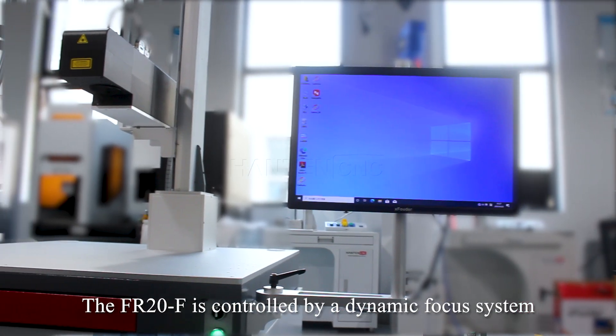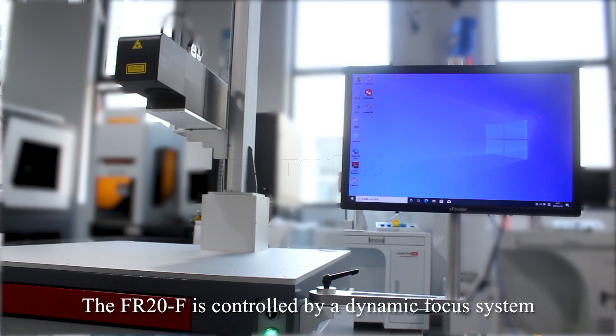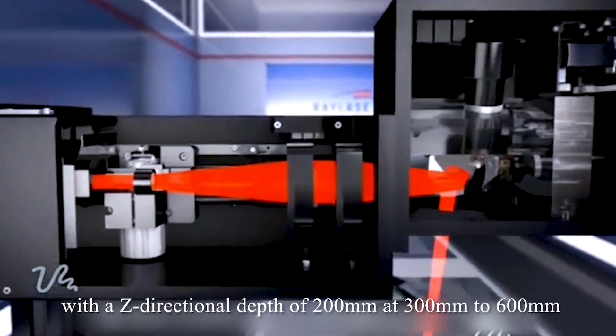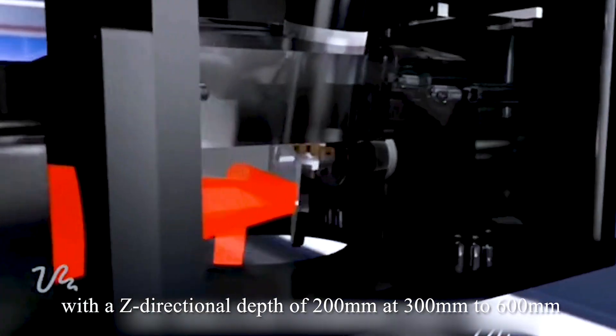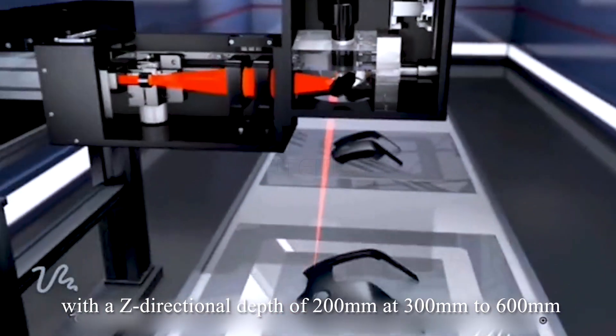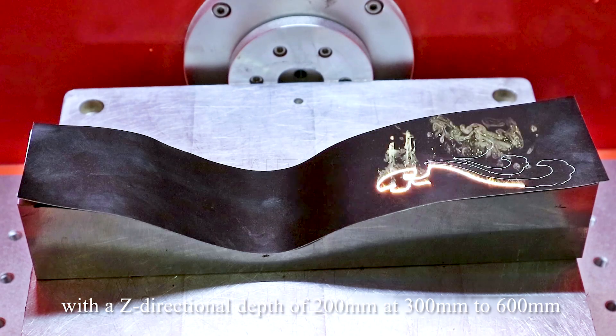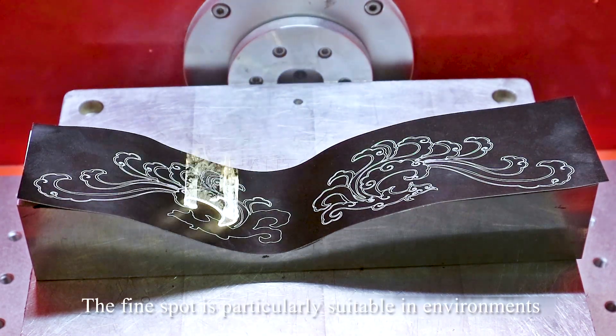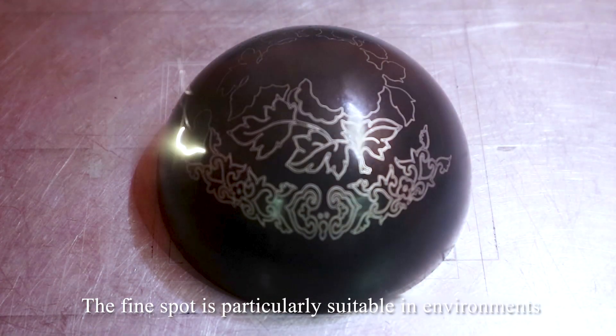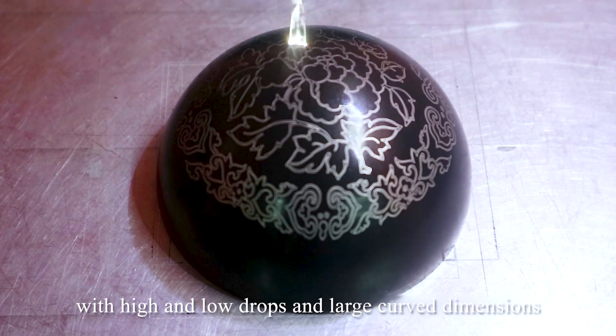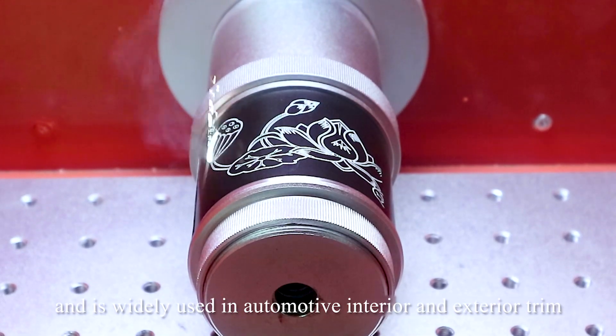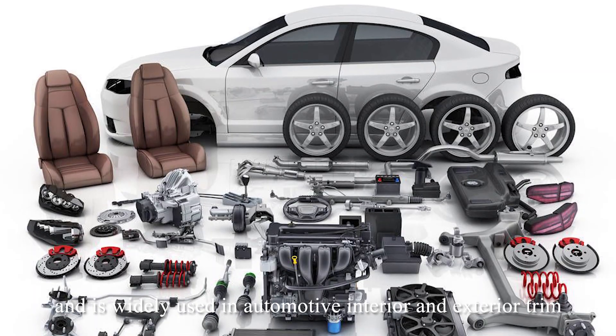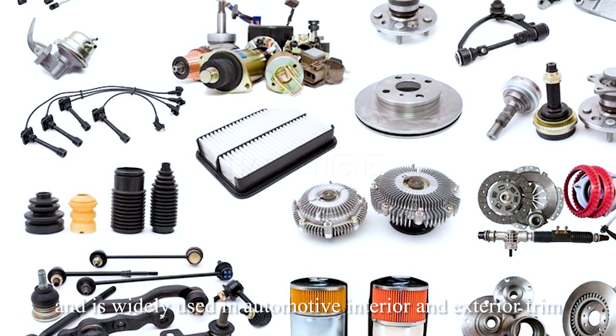Curved surface engraving. The FR20F is controlled by a dynamic focus system with a Z-directional depth of 200 millimeters at 300 to 600 millimeters. The fine spot is particularly suitable in environments with high and low drops and large curved dimensions, and is widely used in automotive interior and exterior trim.